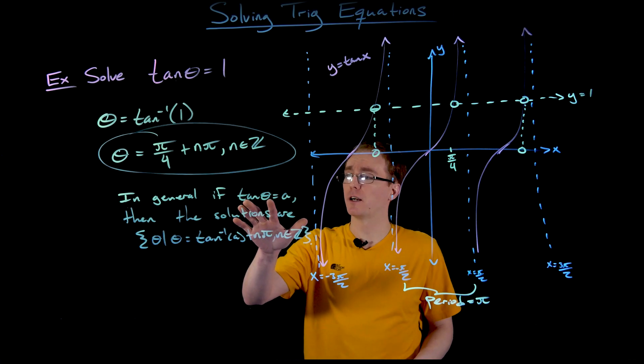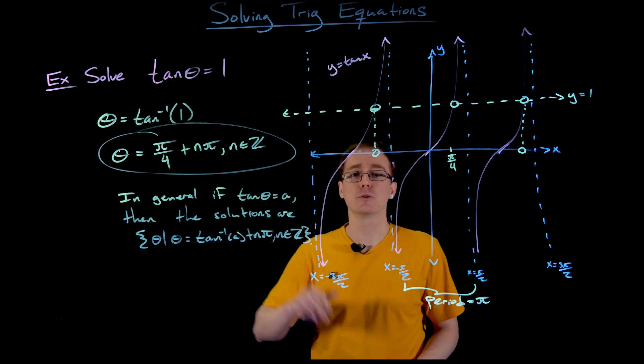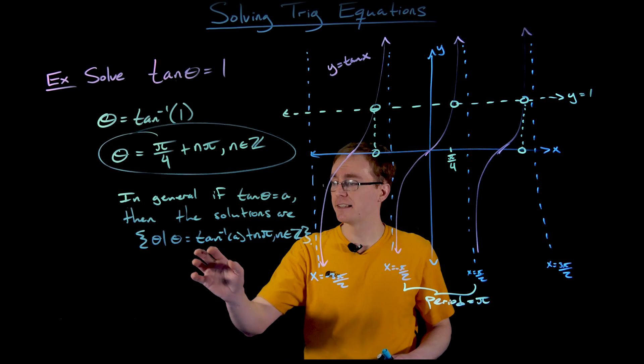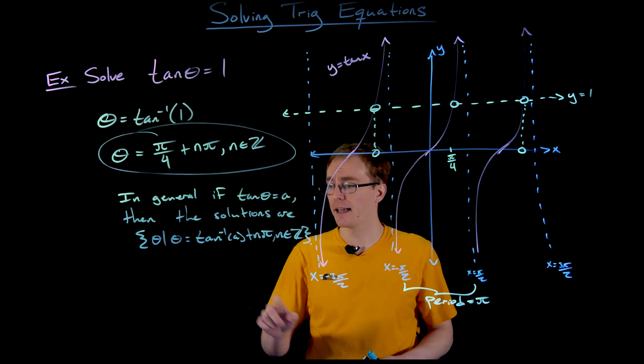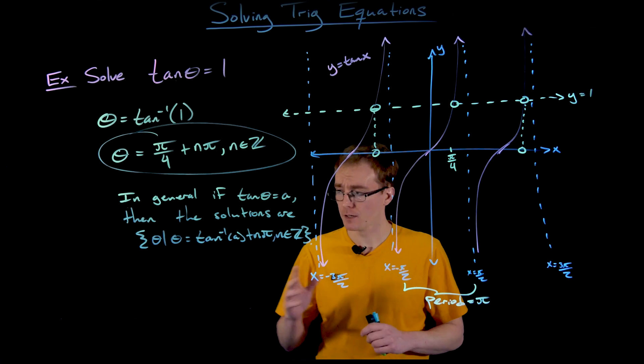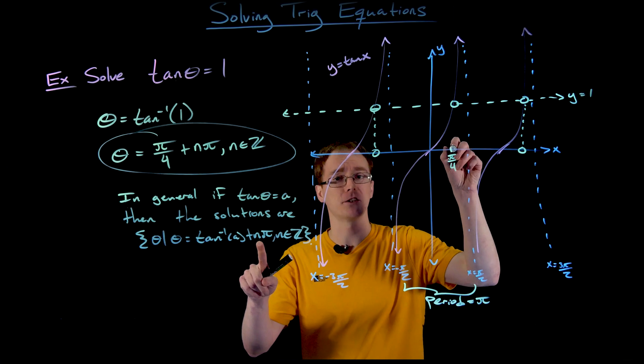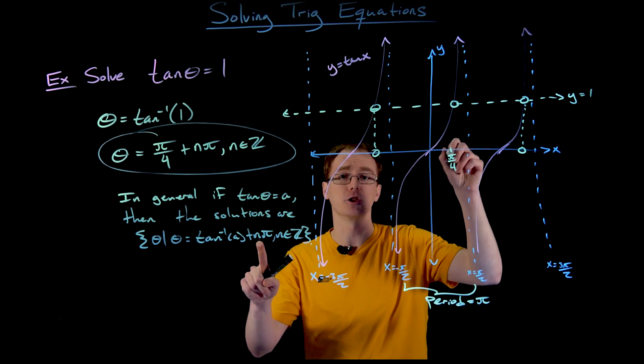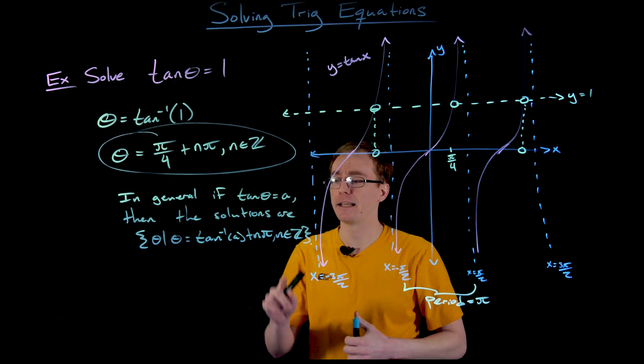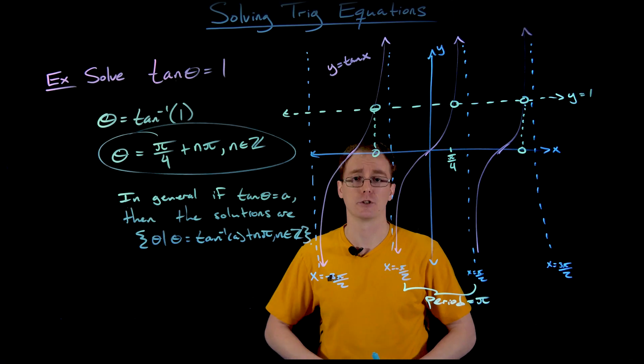If we're solving tangent of theta equals a single number a, the solutions can be listed as: the set of theta values such that theta equals tangent inverse of a plus nπ, where n is an integer. Tangent inverse of a gives our first solution, and adding nπ moves us to different periods, landing us at the infinitely many solutions.